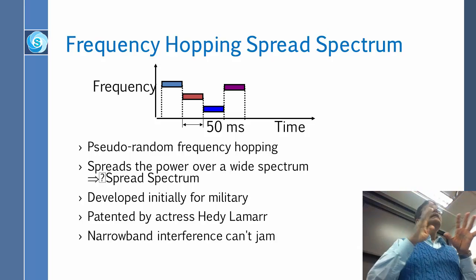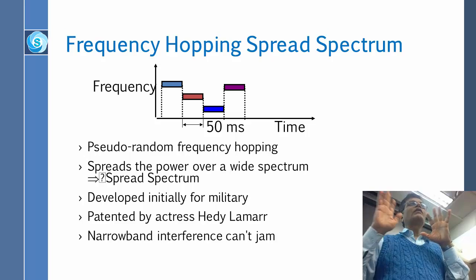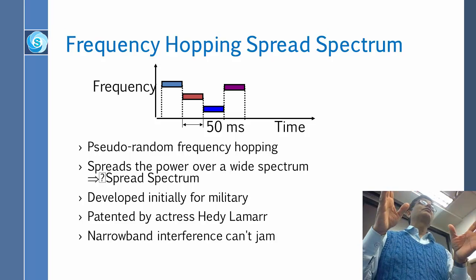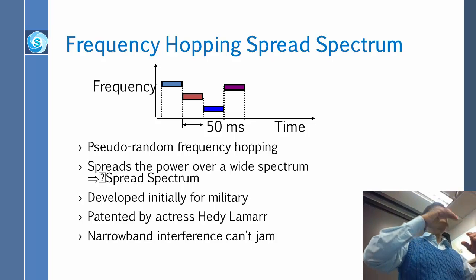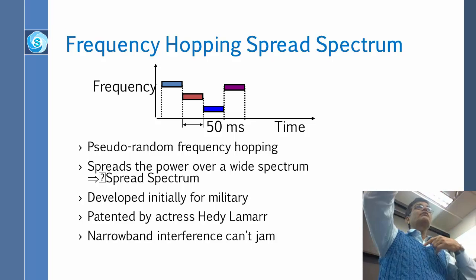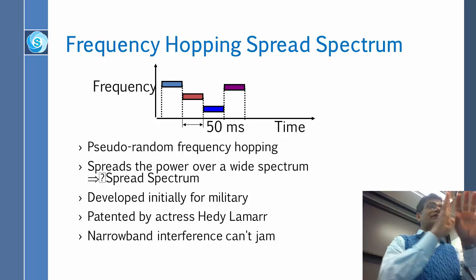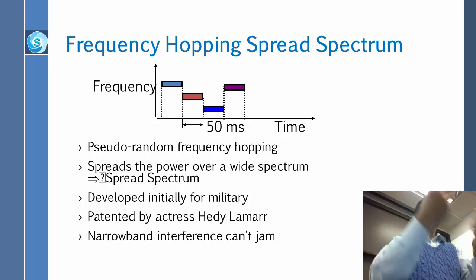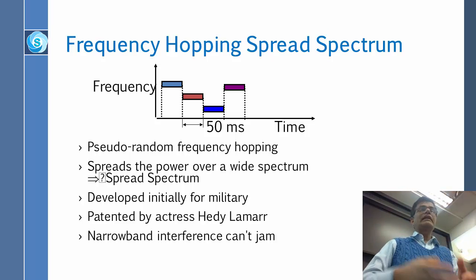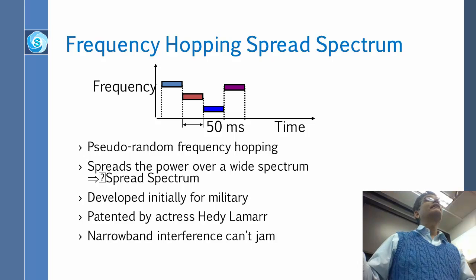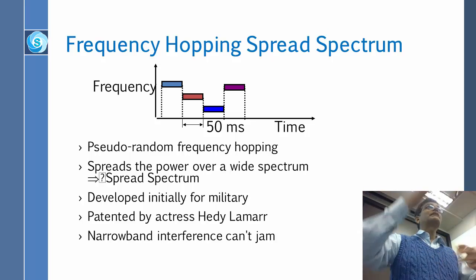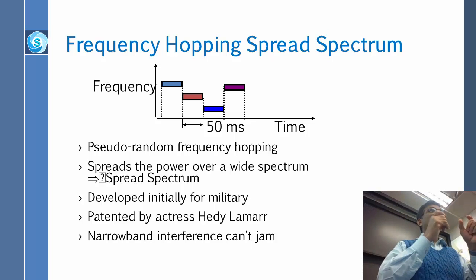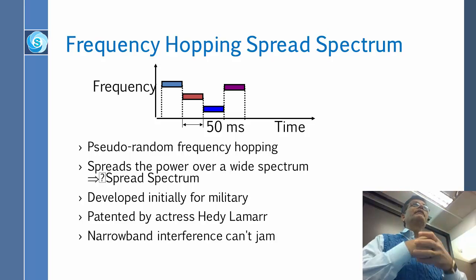One thing you can do is actually avoid interference. We are trying to avoid the interference, so that even if I am talking to you on red and he is talking to him on red, they will collide. But the next 50 milliseconds, they will not collide, because I will switch to something else and he will switch to something else. So there is some interference, but it will be gone quickly.